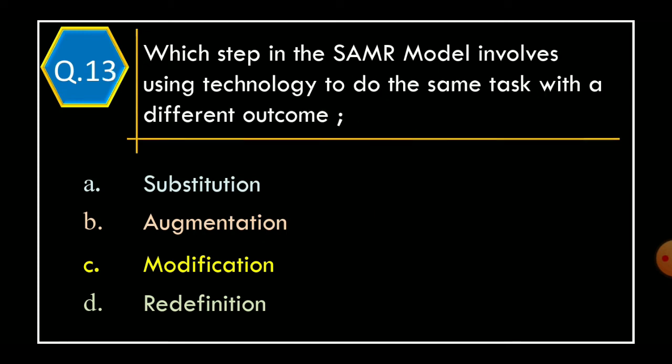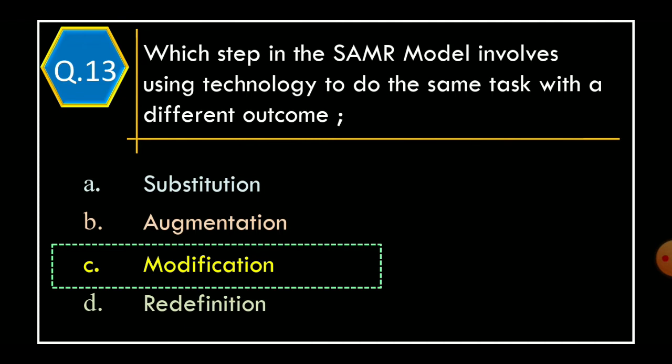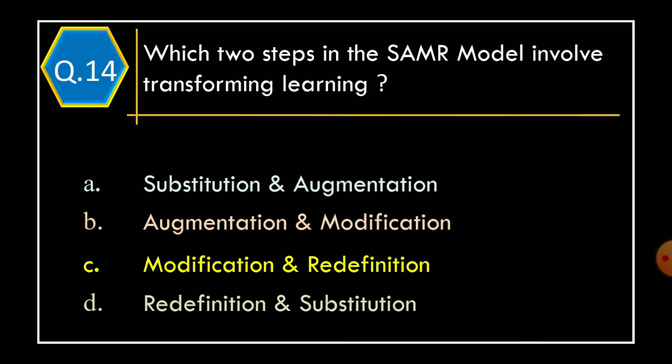Question 13: Which step in the SAMR model involves using technology to do the same task with different outcomes? Option A: Substitution. Option B: Augmentation. Option C: Modification. Option D: Redefinition. And the correct option is Option C: Modification.